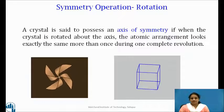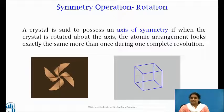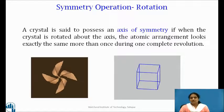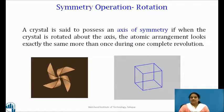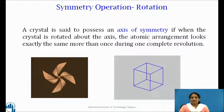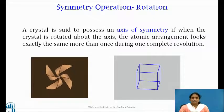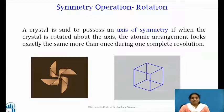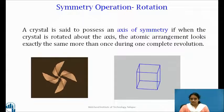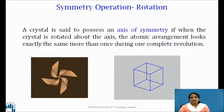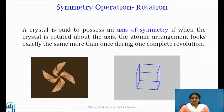Next is symmetry by rotation. A crystal is said to possess an axis of symmetry if when the crystal is rotated about the axis, the atomic arrangement looks exactly the same more than once during one complete revolution. In a rotation operation, represents a counter clockwise movement of 360 by n degree around an axis through the object. If an n-fold rotation operation is repeated n times, then the object returns to its original position. So crystals with a periodic lattice can also have axis with 1, 2, 3, 4 and 6-fold symmetry axis.